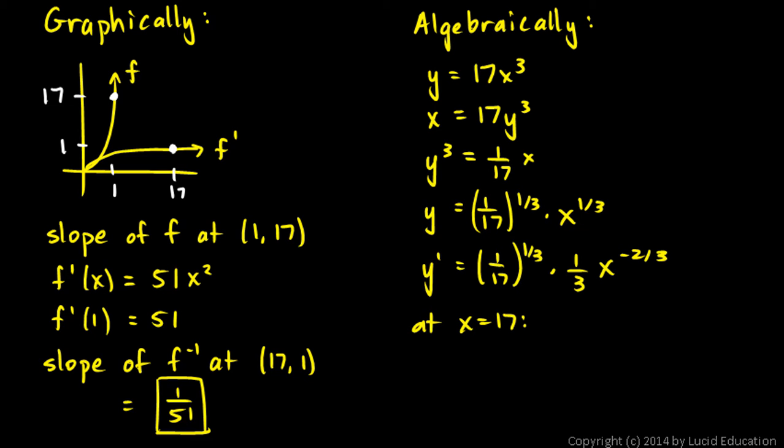So at x equals 17, in other words, y prime of 17 is going to be, this is 1/17th to the 1/3rd. I'm going to write it as 1 over 17 to the 1/3rd times 1/3rd, and then 17 to the negative 2/3rds. So that's 1 over 17 to the 2/3rds. And written that way,